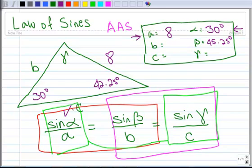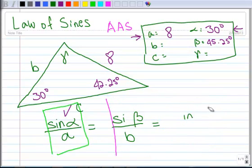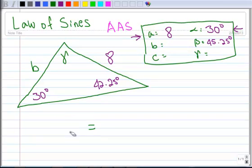So I'm going to use this part of the formula. And then I know angle beta, so I can use this part of the formula and solve for B. So let me go ahead and get rid of this to make ourselves some more room here.